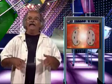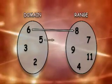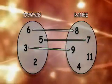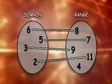If however, a member of the domain is paired with more than one member of the range, the relation is not a function. Here's another relation with the domain and range. The six picks the eight, the five chooses the seven, the three goes for the nine, but the two is having a hard time picking between the eleven and the four.